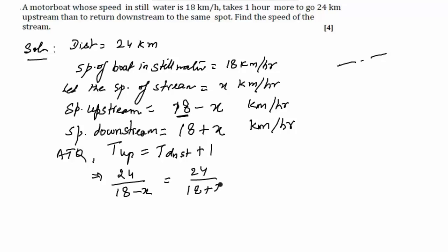On cross-multiplying, we get the equation as x² + 48x - 324 = 0. This implies (x - 6)(x + 54) = 0, so x = 6 and x = -54.